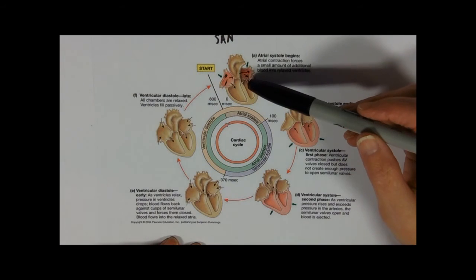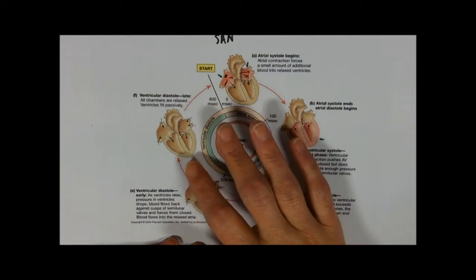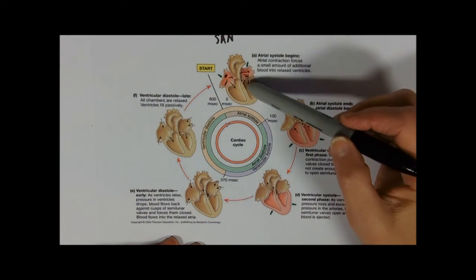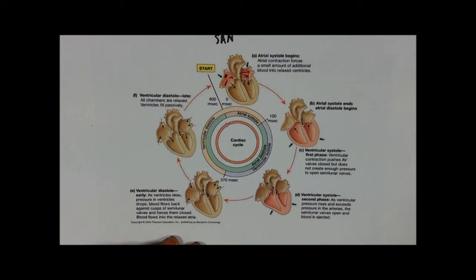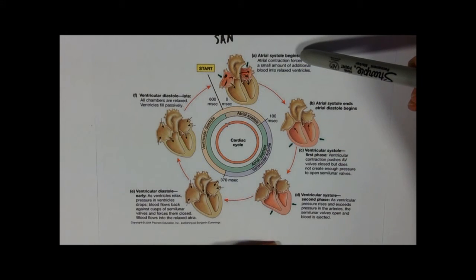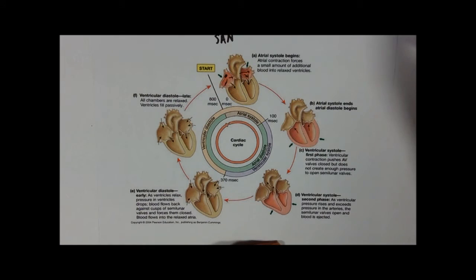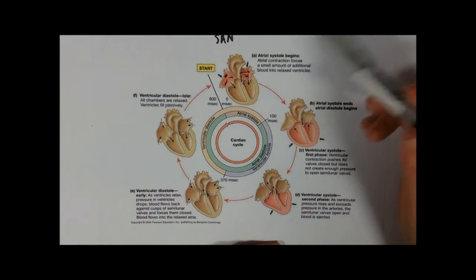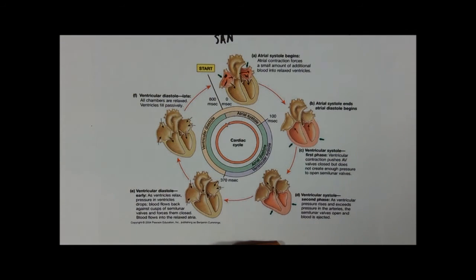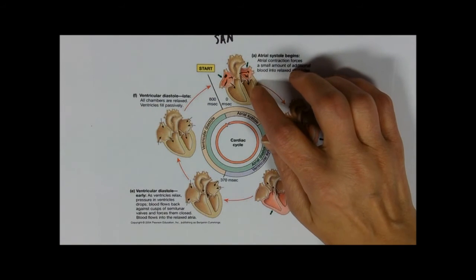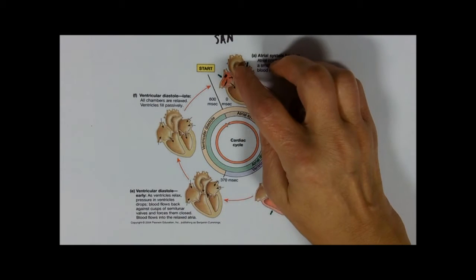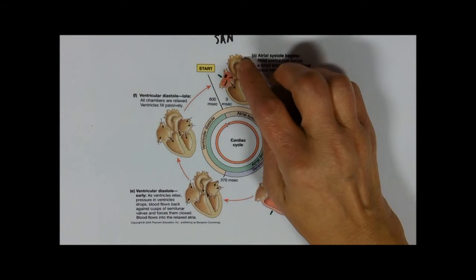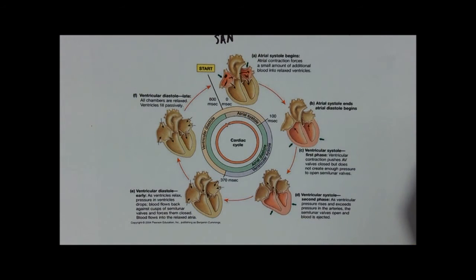Atrial systole is the muscles of the atria contracting and emptying the atria into the ventricles. Prior to that, the ventricles have been filling up directly from the veins, so the blood's been flowing through directly into the ventricle and they're almost full. This is the last squeeze to fill them up properly. We're making a higher pressure in the atria than in the ventricles. You'll notice on this diagram that the atrioventricular valves are open to let blood through into the ventricles, but the semilunar valves at the base of the arteries are both closed, because the pressure in the artery is higher than in the ventricles.